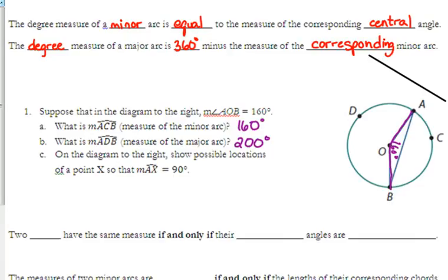Okay, now here's my challenge for you. On the diagram to the right, show possible locations of a point X, so that the measure of arc AX is 90 degrees. There are two places where you could put an X, where the measure of arc AX would be 90 degrees. X should be about right here, or right here close to D is one way to go, and then about halfway between C and B.